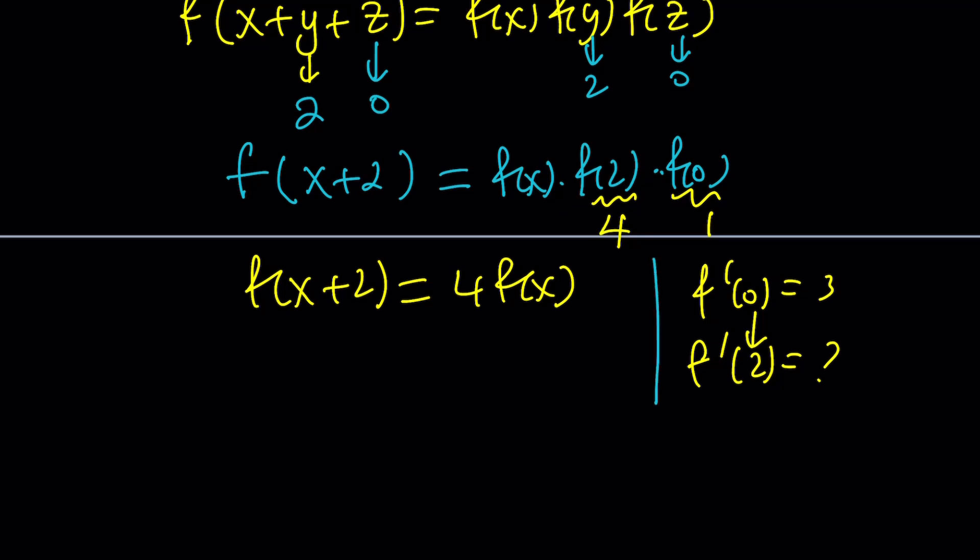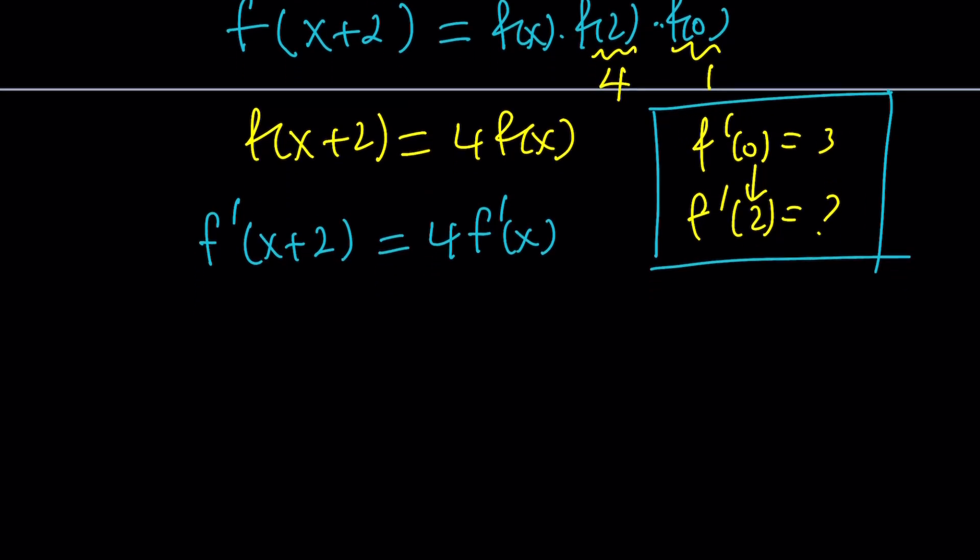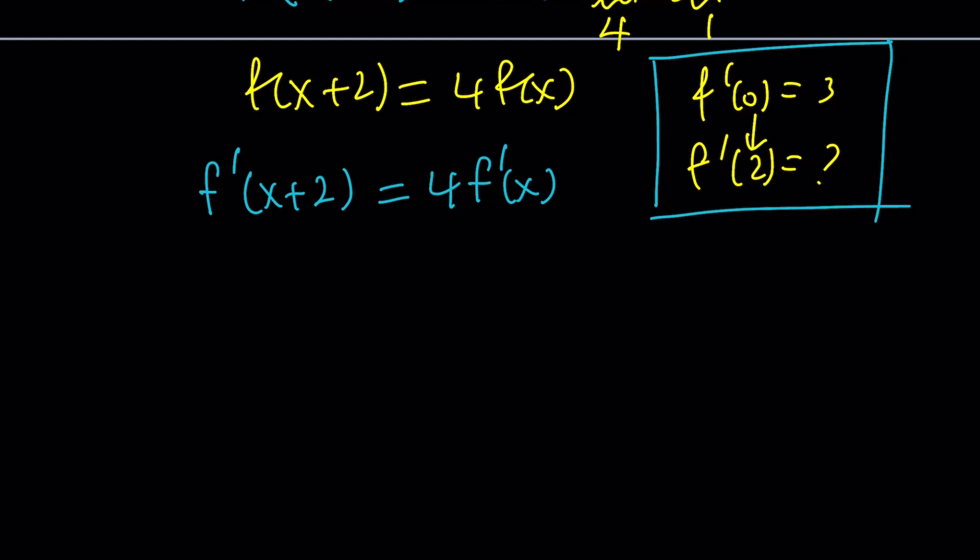But we do need the derivatives. Therefore, let's differentiate both sides, shall we? If we do differentiate it by the chain rule, this is going to be f'(x+2) times the derivative of x+2, but that's just 1. Because the derivative of 2 is 0, equals, the constant doesn't matter, times f'(x). Great. This doesn't give us f' or f or anything like that, but we can use what we know. f'(0) is equal to 3, so let's replace x with 0, and that gives us f'(2) equals 4 times f'(0). And we do know that f'(0) is equal to 3. So this is equal to 3. Therefore, f'(2) is equal to 12. Make sense?